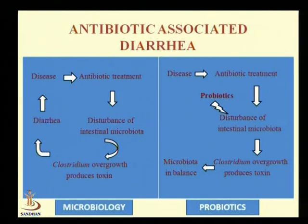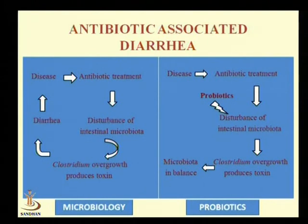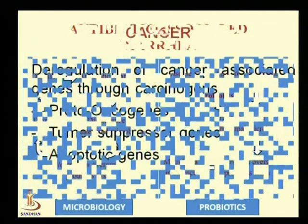With the help of probiotic microorganisms, through mechanisms discussed earlier, probiotics inhibit the entry of Clostridium into the epithelial cell or produce toxins responsible for controlling the overgrowth of Clostridium, thereby re-balancing the microorganisms normally present in the intestine.